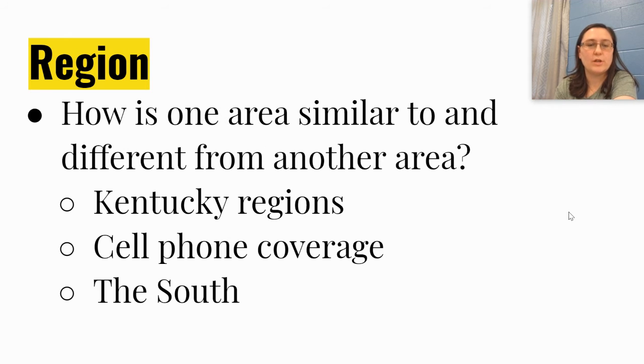Next, write this down. We have region. It answers the question, how is one area similar to and different from another area? Very, very simple. We have Kentucky regions. You should have learned about those in fourth or fifth grade, like the Bluegrass region, all that stuff.